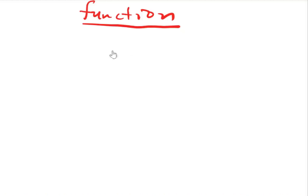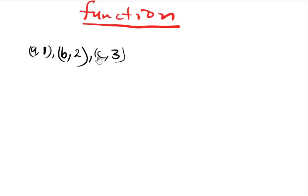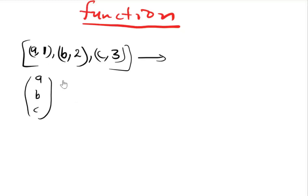For example, if we have a→1, b→2, and c→10, this is an example of a function. This can be represented with domain {a, b, c} and co-domain {1, 2, 3}.